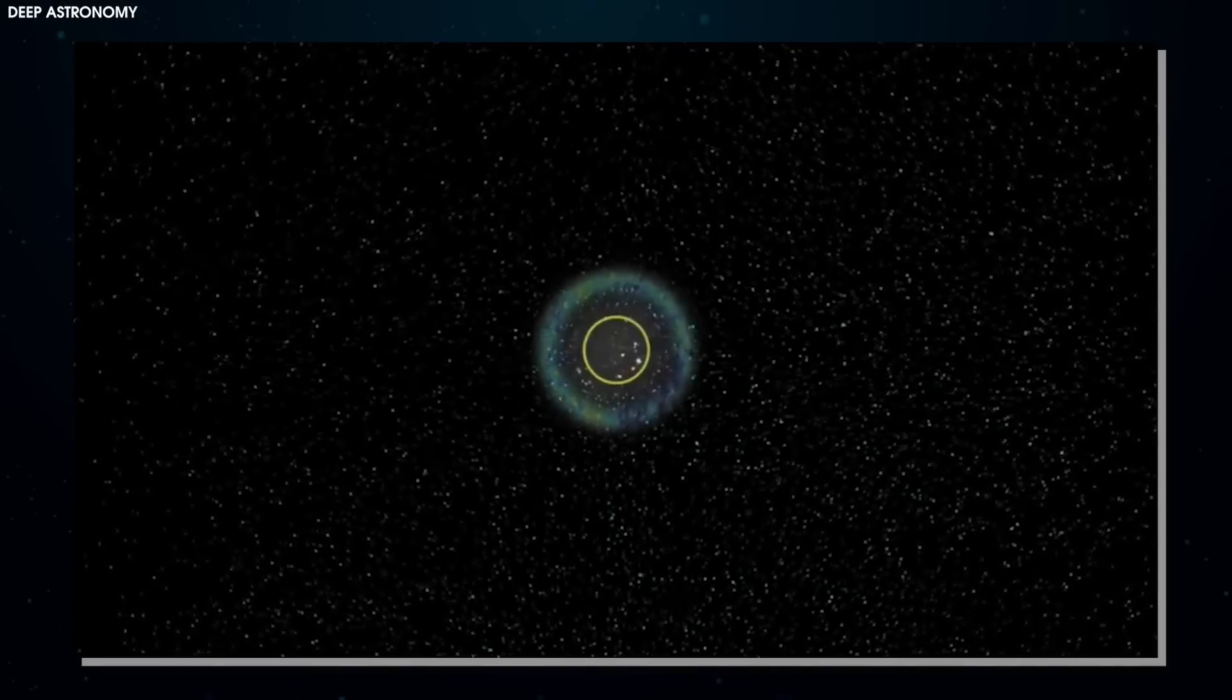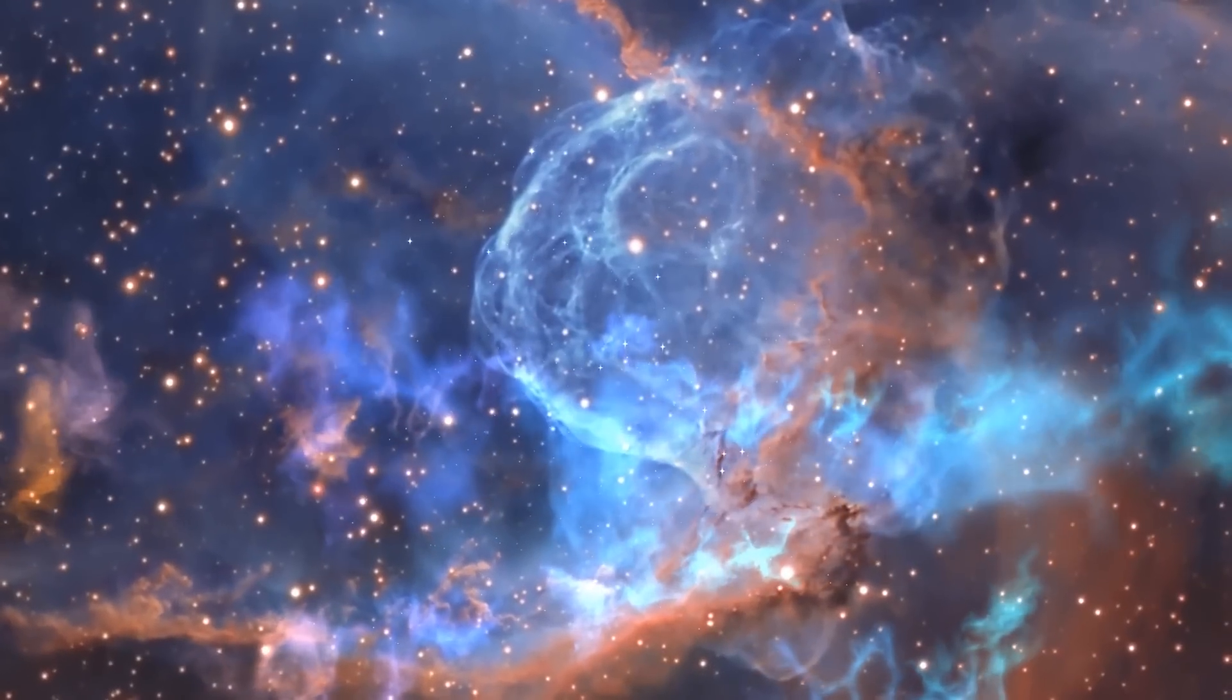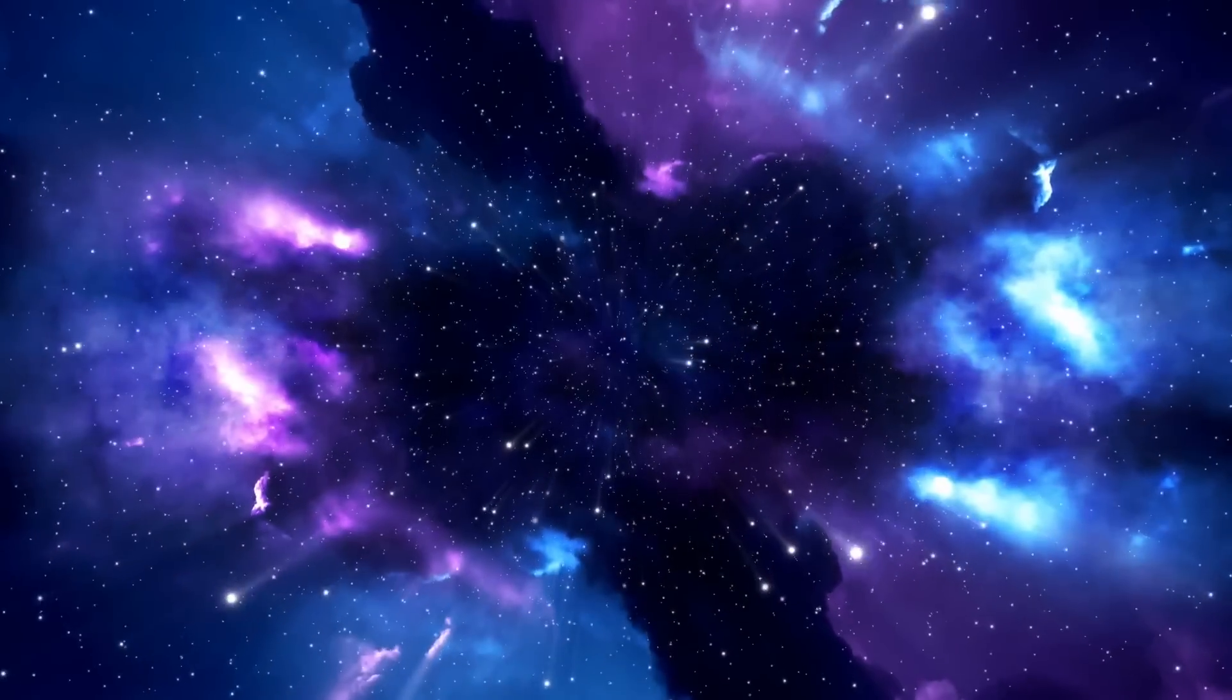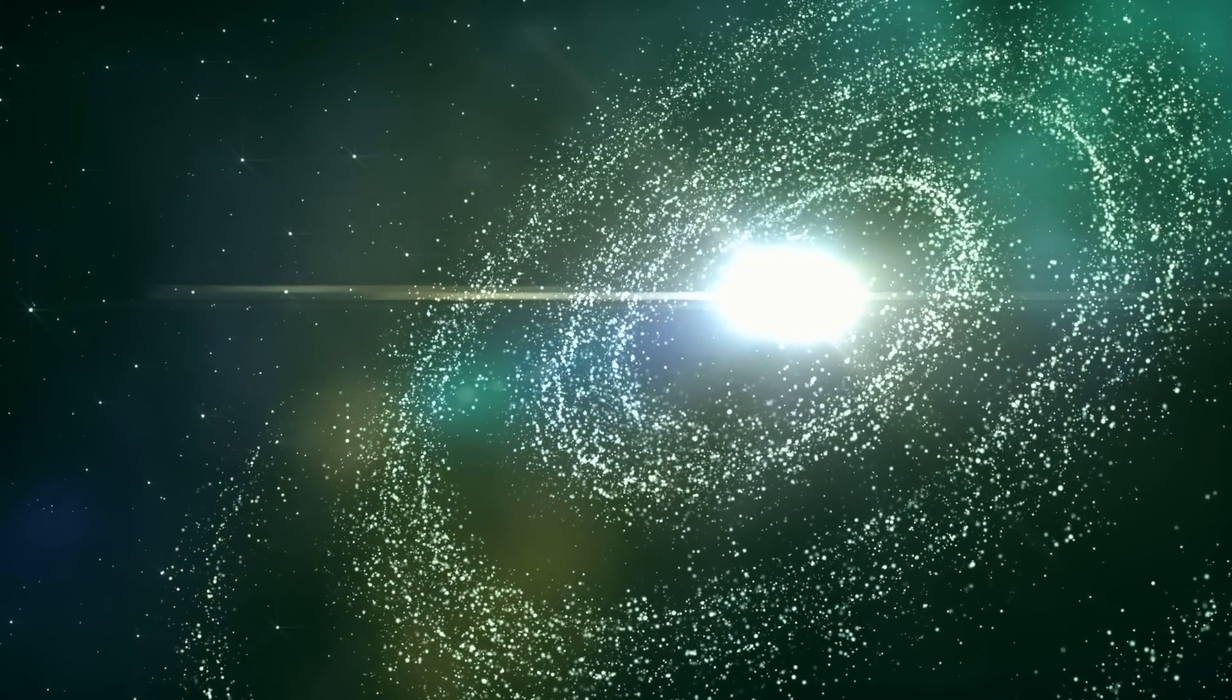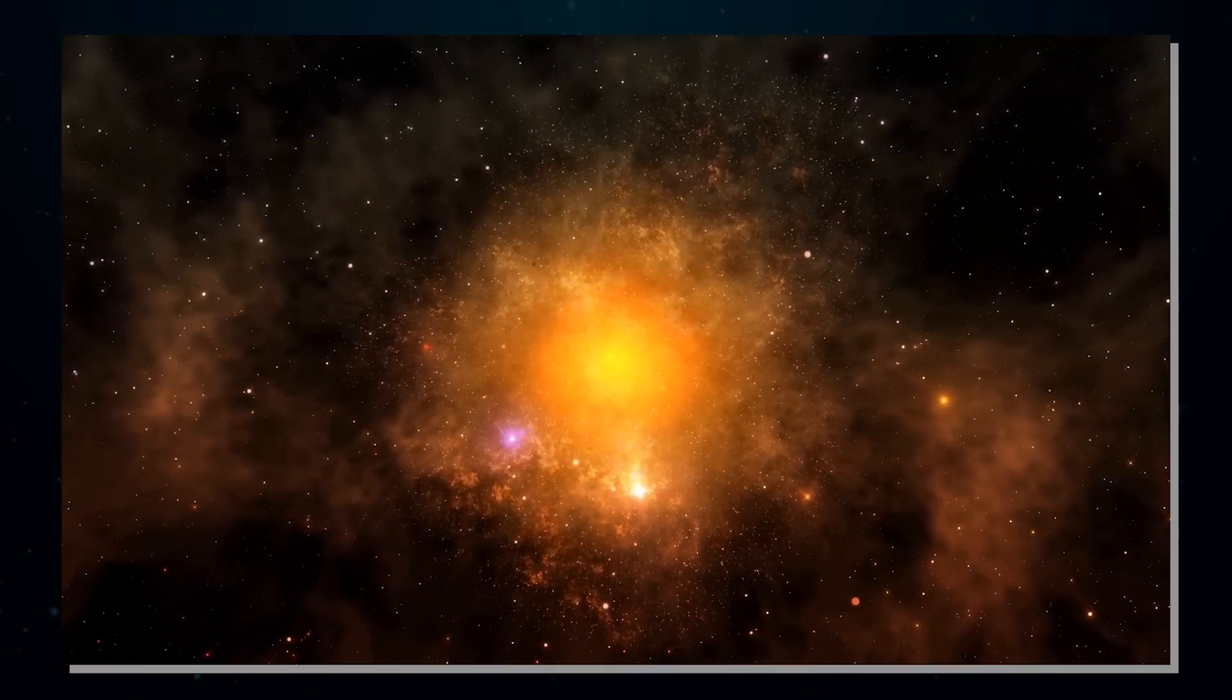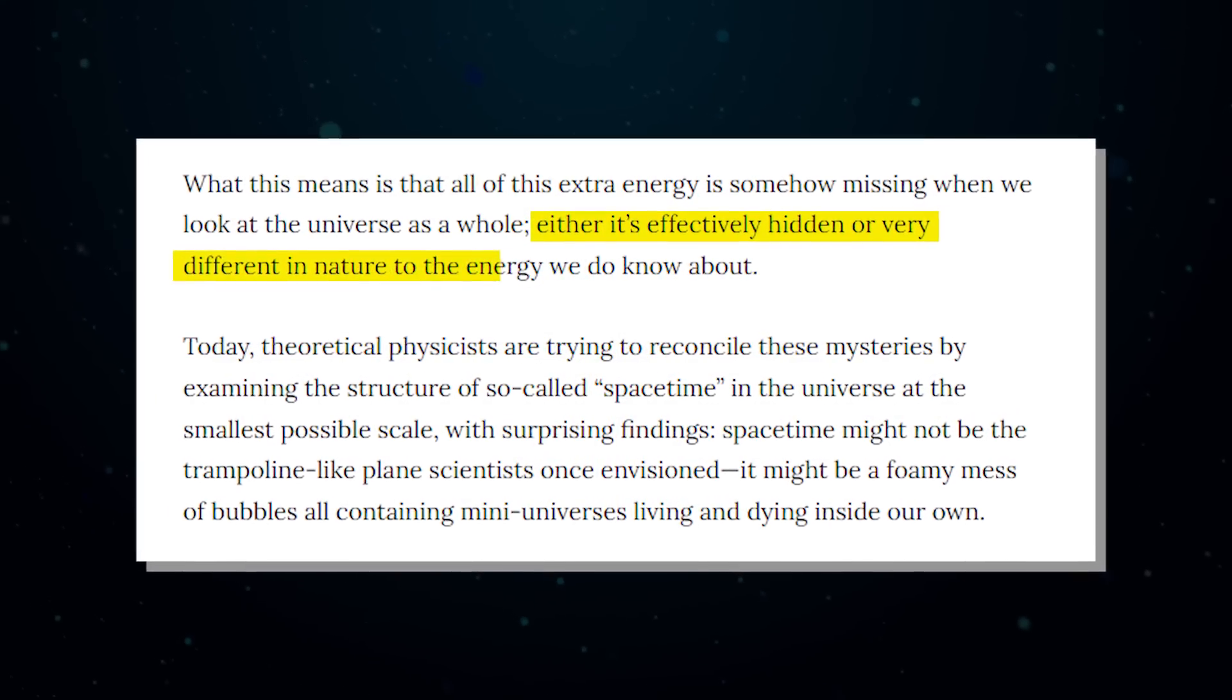After we learned that the universe's expansion is accelerating, however, scientists could no longer conveniently cancel out Einstein's anti-gravity suggestion. What was previously assumed to be empty space in the universe now had to be filled with huge amounts of mysterious anti-energy in order to explain observations of the universe's ever-quickening expansion. Even so, observations of the universe's expansion suggest that the energy is 60 to 120 orders of magnitude lower than what recent quantum field theory predicts. What this means is that all of this extra energy is somehow missing when we look at the universe as a whole. Either it's effectively hidden, or very different in nature to the energy we do know about.